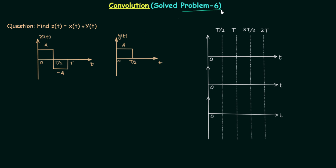Let's solve the sixth problem based on convolution. In this problem we need to find signal Z(t), which is equal to the convolution of signal X(t) with signal Y(t).